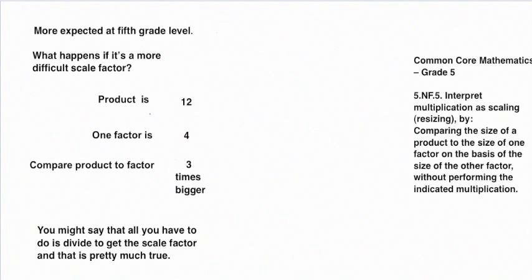But really, we expect more at the fifth grade level. What happens if it's a more difficult scale factor? It seemed like the pattern was that all you have to do is divide to get the scale factor, and that's pretty much true. As we saw, for example, with 12 being the product, one factor being 4, it ended up being 3 times bigger.